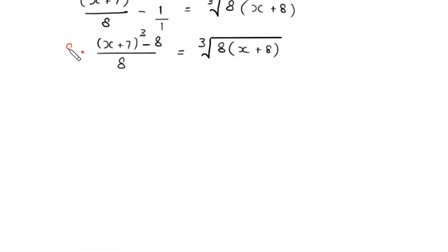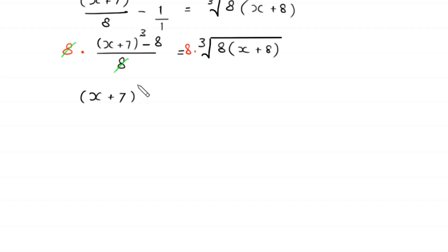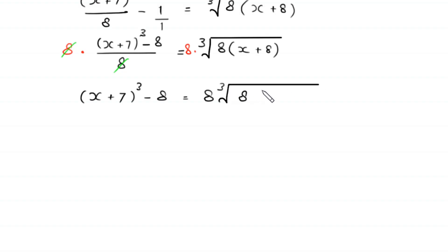We multiply both sides by 8. The 8 in the denominator cancels with the 8 on the right, and at the left-hand side we are left with (x+7)³ minus 8 equals 8 times the cube root of 8(x+8).